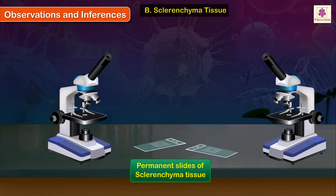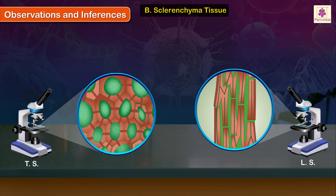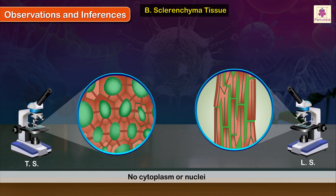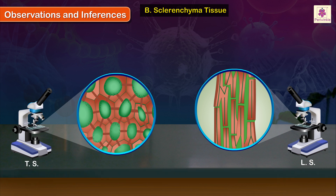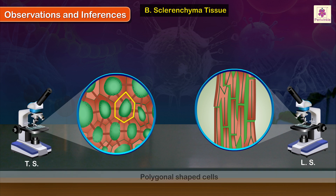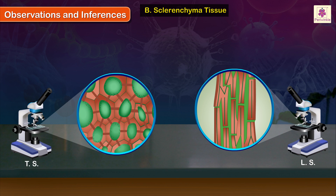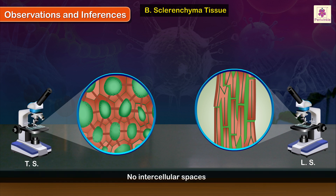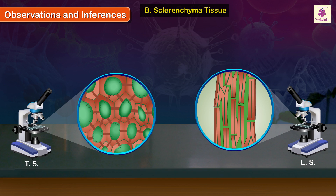B. Sclerenchyma: Examine the permanent slides of sclerenchyma tissue under the compound microscope. Start observing first under low magnification and then under high magnification. Usually the cells of sclerenchyma have no cytoplasm or nuclei — the cells are dead. The cells are of polygonal shape. These cells have low water content. Cells occur close to each other with no intercellular spaces. Cells have long, narrow tubular ducts or cavities called lumen cavities.